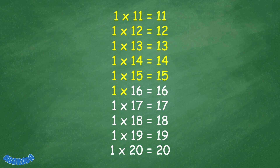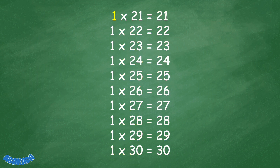1 times 15 equals 16, 1 times 17 equals 17, 1 times 18 equals 18, 1 times 19 equals 19, 1 x 20 equals 20, 1 x 21 equals 21, 1 x 22 equals 22, 1 x 23 equals 23.